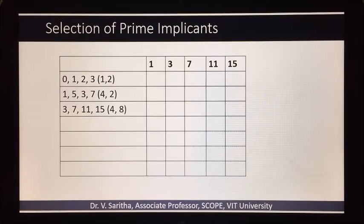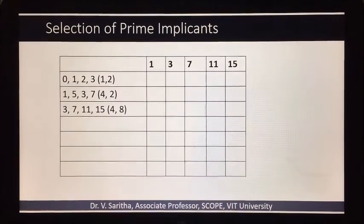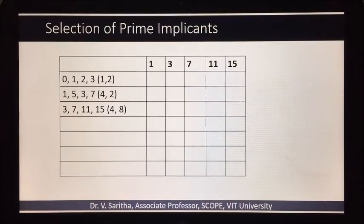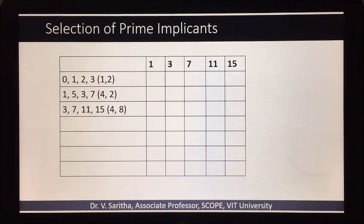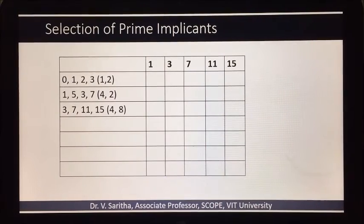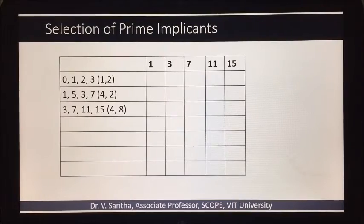The next step is selection of prime implicants. The change comes here only when don't care conditions are given in the problem. So while you are selecting the prime implicants from the determined ones which are done in the first step.